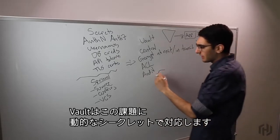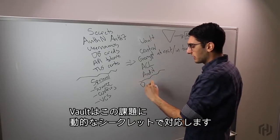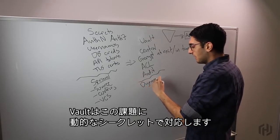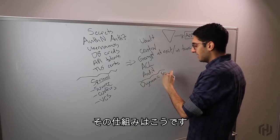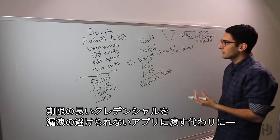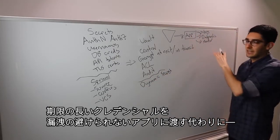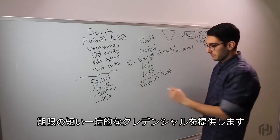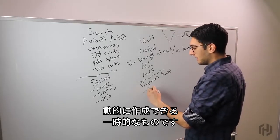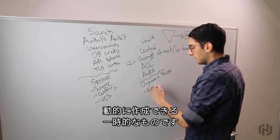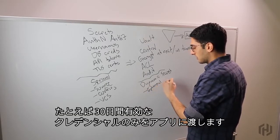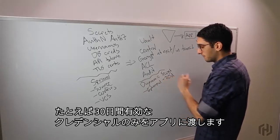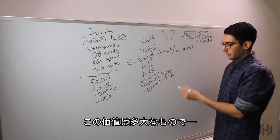One of the second level capabilities Vault introduces is what we call dynamic secrets. The idea behind a dynamic secret is instead of providing a long-lived credential to the application, which it inevitably leaks, we provide short-lived ephemeral credentials. So these things are dynamically created, but they're ephemeral. We might only give a credential to an application that's valid for, say, 30 days.